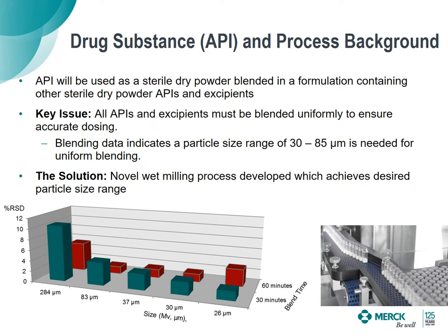What makes this project unique and challenging is that this sterile dry powder is going to be blended with two other sterile powders as well as a sterile excipient. Due to this blending of sterile dry powders, we really need to think about the content uniformity of the blend — what particle size and morphology do we need to achieve in order to get a uniform blend? Each vial needs to have the correct percent of the different APIs to a fairly tight tolerance.